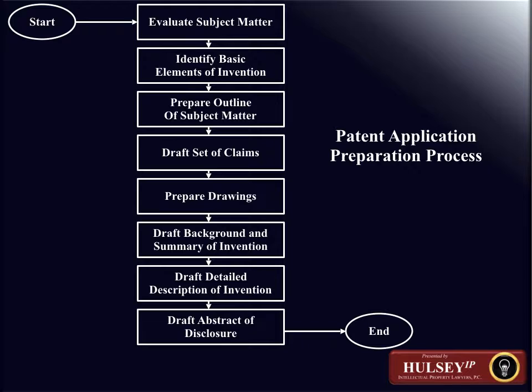This next diagram illustrates a simplification of the patent preparation process. Beginning at the upper left-hand corner of the diagram, you start with the evaluation of the subject matter that could be protected by a patent. Once it's been determined that a patent should or could be filed for an invention, one of the things you do in preparing the patent application is to identify the basic elements of the invention.